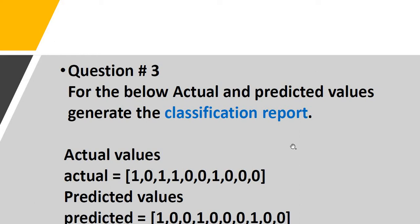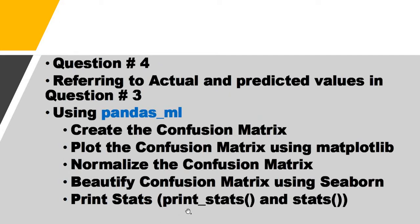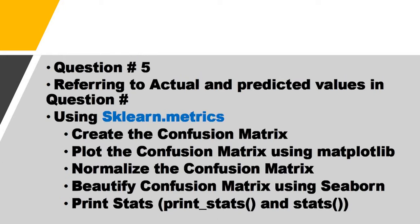Use the pandas_ml package to create a confusion matrix, plot it, normalize it, and beautify the confusion matrix, followed by printing the stats and the print_stats.